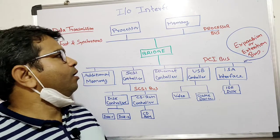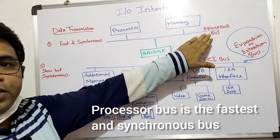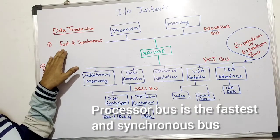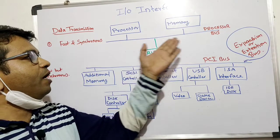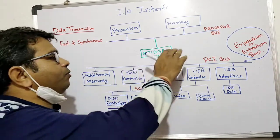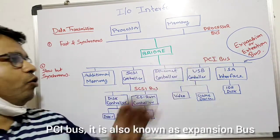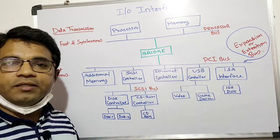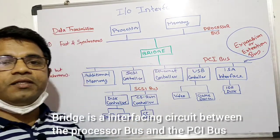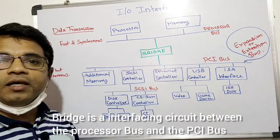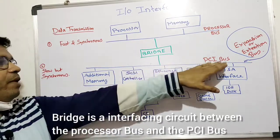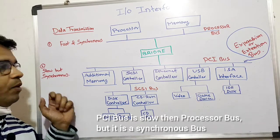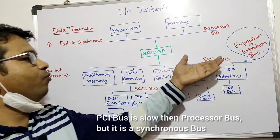In this diagram you can see different buses. The processor bus connects the memory and the processor — it is the fastest and synchronous bus, allowing fast data transmission between the processor and memory. The second bus is the PCI bus, also known as the extension or expansion bus. A bridge interface — an interfacing circuit — connects the processor bus and the PCI bus, allowing data transfer between the two. The PCI bus is slower than the processor bus but is also synchronous.